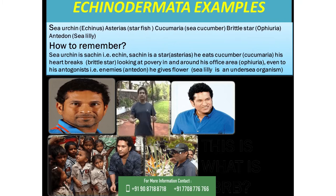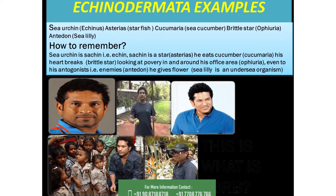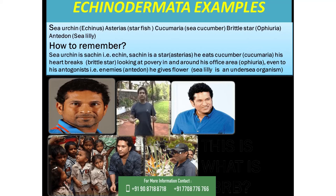Thank you. Look at this picture. Sachin, the famous cricketer — he is eating cucumber, Cucumaria. When he goes to office, looking at poverty people, he breaks his heart as a brittle star. Even to his antidote — his enemies — he gives sea lily flowers to them. He is a star — Asterias. Sachin, Echin — Echinus.